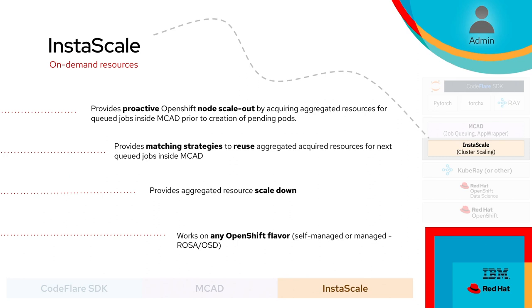One might ask: what if my cluster doesn't have the right resources to run my AI workload? Enter InstaScale. InstaScale is a proactive node scale-out mechanism that acquires aggregated resources needed for queued workloads without creating pending pods. Acquiring resources in the cloud is time-consuming due to supply and demand issues — InstaScale is intelligent in reusing acquired resources for the next workload. It provides aggressive scale-down: when there are zero workloads queued in MCAD, you run only your control plane and save thousands of dollars by not wasting resources on idle GPU nodes. It works with any OpenShift flavor, be it self-managed or managed environments like OSD or ROSA.